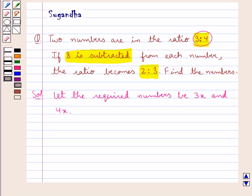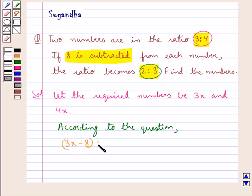In the question we have that if 8 is subtracted from each number, the ratio becomes 2 is to 3. So according to the question we have 3x minus 8 is to 4x minus 8 equals 2 is to 3.